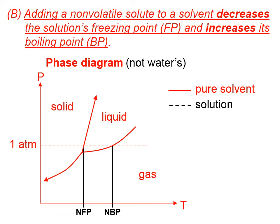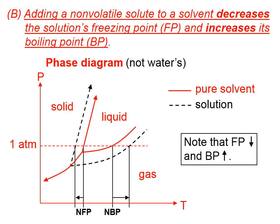If we turn this solvent into a solution by adding something like salt or sugar, the phase diagram changes a bit. The solid-liquid line moves to the left, and the liquid-gas line moves down a bit, so that the boiling point ends up increasing and the freezing point ends up decreasing. This occurs for any non-volatile solute added to a solvent — the boiling point will get higher and the freezing point will drop.